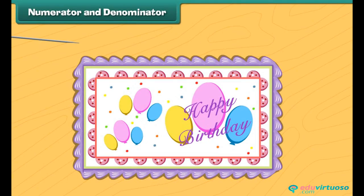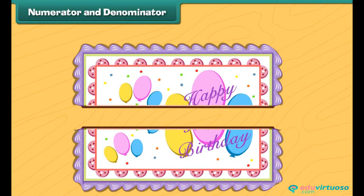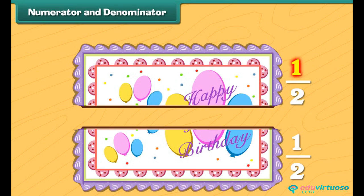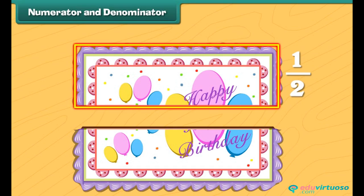Here is a whole birthday cake. Let's cut it into small pieces. Now, if we cut the cake from the middle, we get two equal size pieces. Each piece is one half of the whole cake. We can write that as a fraction. The bottom number, called the denominator, tells us the total number of pieces that make up one whole. The top number is called the numerator, which shows the number of parts. So, this is one half of the cake.